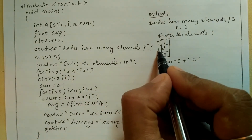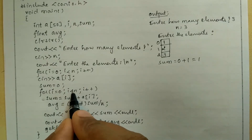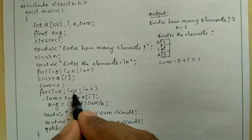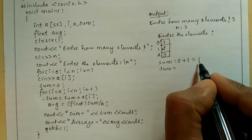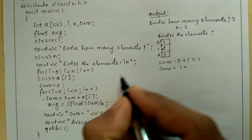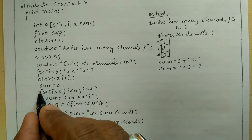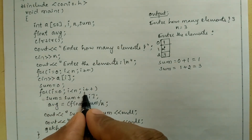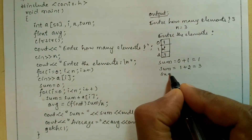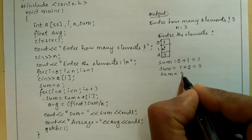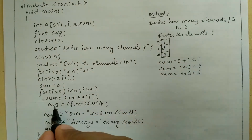Now i is pointing to index 1 which holds value 2. 1 is less than 3, condition is true — sum equal to sum (1) plus a of 1 (which is 2), so 1 plus 2 gives 3, stored in sum. Control transfers back, i is incremented to 2. 2 is less than 3, condition is true — sum equal to sum (3) plus a of 2 (which is 3), so 3 plus 3 is 6, stored in sum.